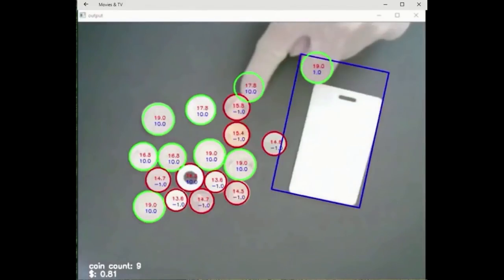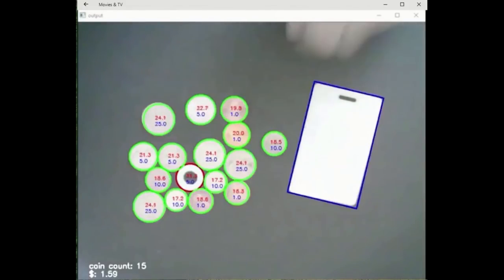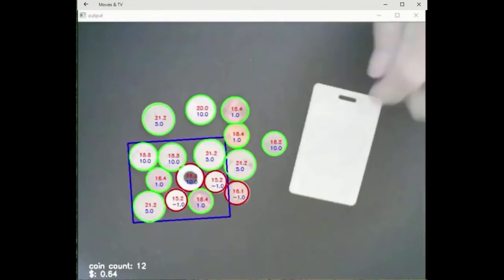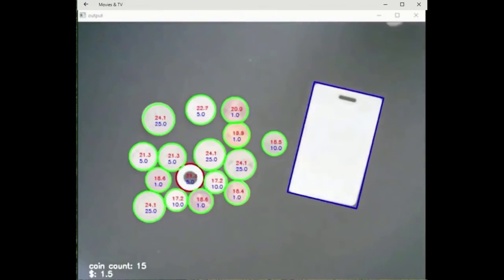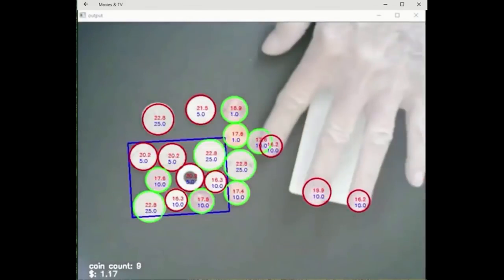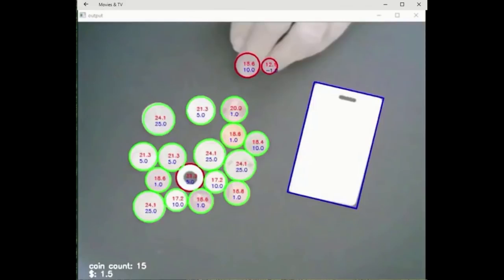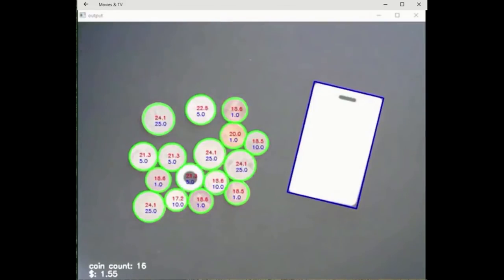Also, the color range varies from shiny bright dimes to oxidized copper pennies. Selecting a black matte background was very important in having a background color that was far from the coin color space in HSB. The background material was chosen to maximize the Euclidean distance from the coin color space to the background. The black matte worked much better than a white background.